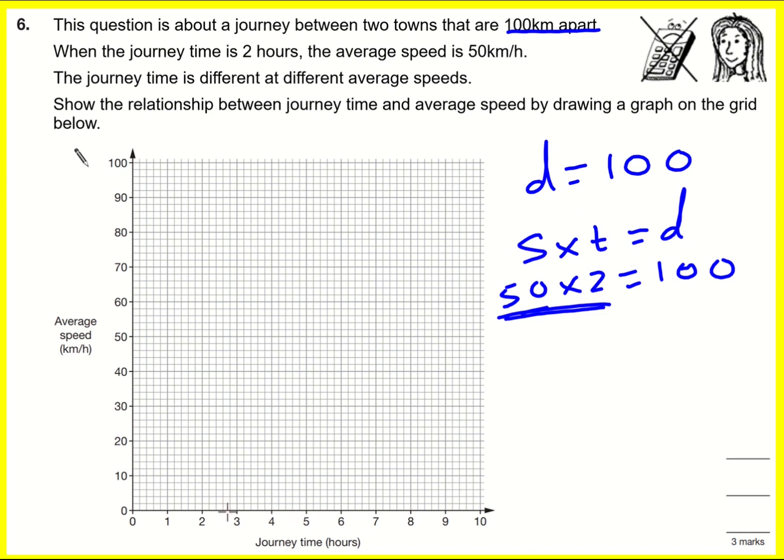And what we actually have to do is put a little point on the graph. If the average speed is 50, then the journey time is 2. So that is our first point. It just goes with that part.